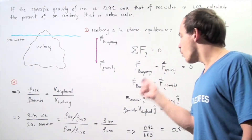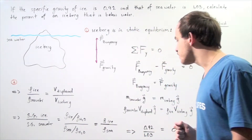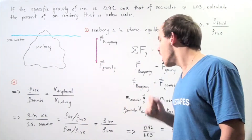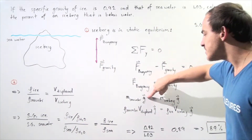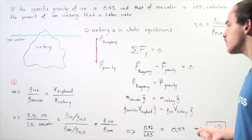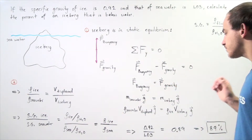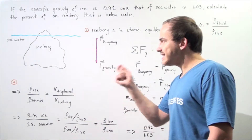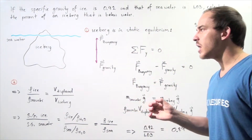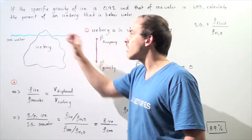The force of buoyancy, according to Archimedes' Principle, is equal to the mass of the seawater that is displaced by our object multiplied by the gravitational constant g. And that is equal to the mass of the iceberg multiplied by g. The mass of the seawater is simply the density of seawater multiplied by the volume of the seawater displaced by our object.